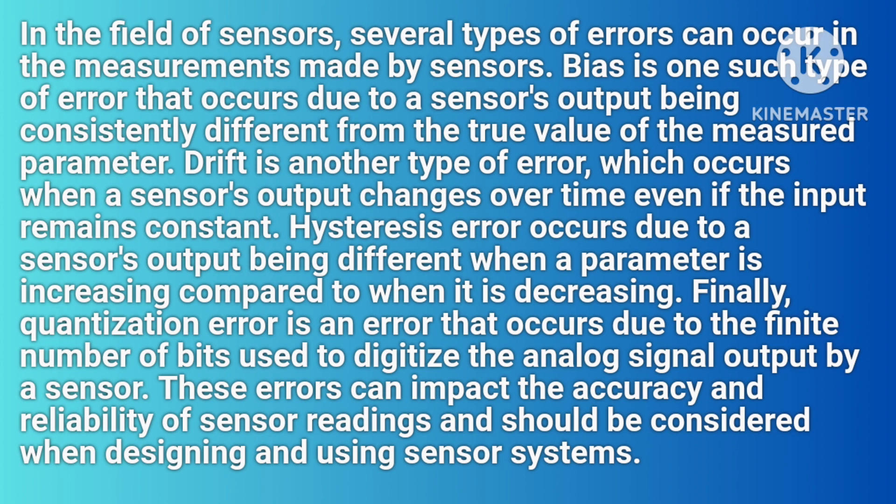Hysteresis error occurs due to a sensor's output being different when a parameter is increasing compared to when it is decreasing. Finally, quantization error is an error that occurs due to the finite number of bits used to digitize the analog signal output by a sensor.